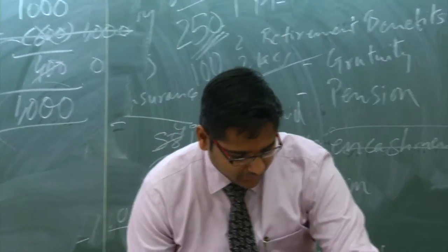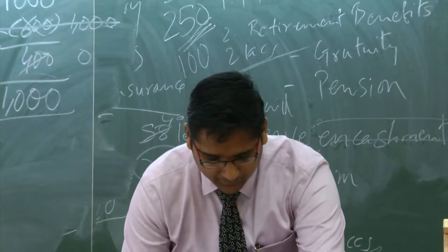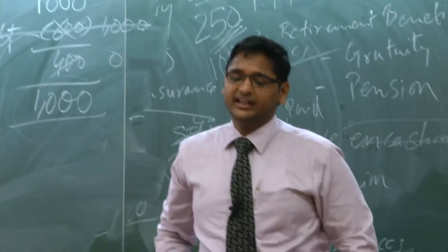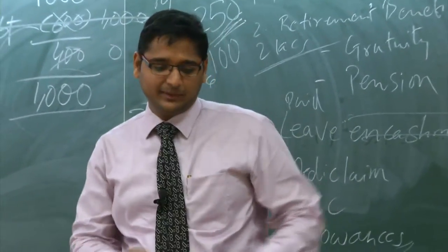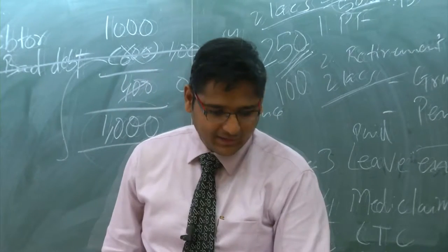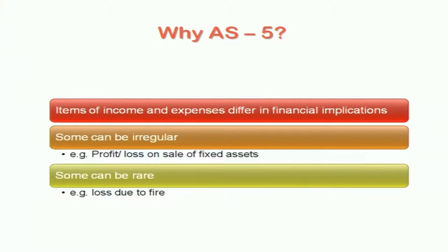We will do one more standard. Let us try and complete AS5 also. AS5 is about net profit or loss for the period, prior period items and changes in accounting policies. AS5 is there to give you disclosures. AS5 does not actually talk about accounting; it talks about how to disclose those items in your income and expenditure or profit or loss account.